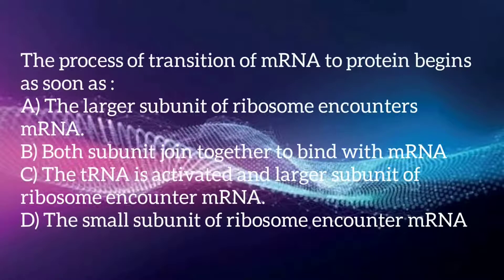The process of transition of mRNA to protein begins as soon as: Option A, the larger subunit of ribosome encounters mRNA. Option B, both subunits join together to bind with mRNA. Option C, the tRNA is activated and the larger subunit of ribosome encounters mRNA. Option D, the small subunit of ribosome encounters mRNA.